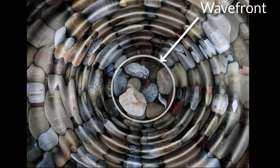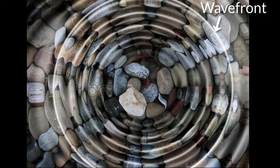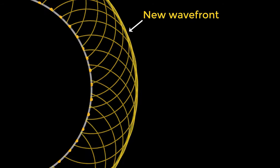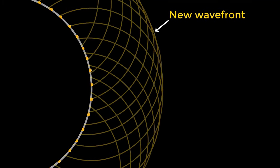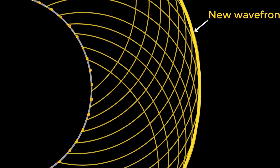Huygens says light is a wave and gives us a way to figure out how the wavefronts evolve. A wavefront can be thought of as a set of particles which are oscillating in sync with each other. According to Huygens, every point on this wavefront acts as a source for secondary waves, and the envelope of these secondary waves — a common tangent to them — represents a new wavefront.